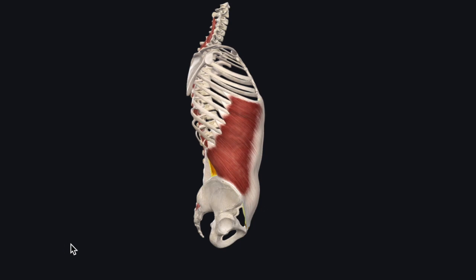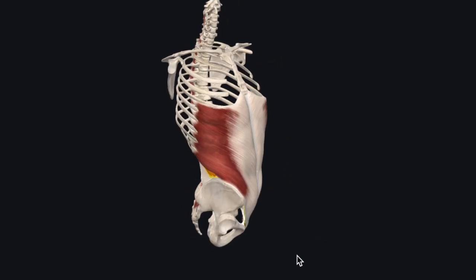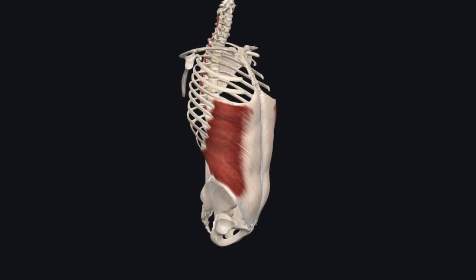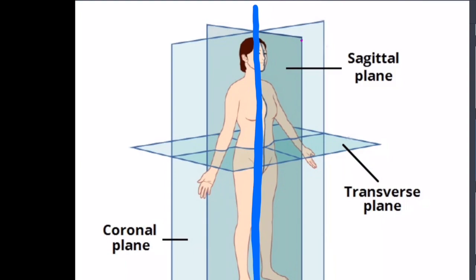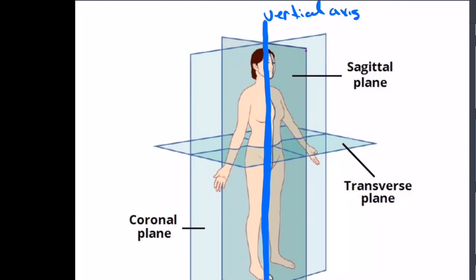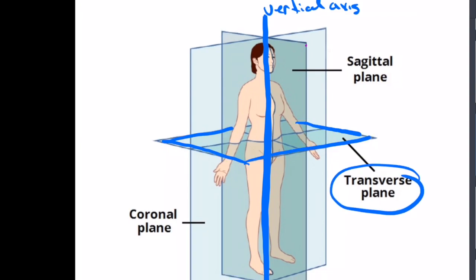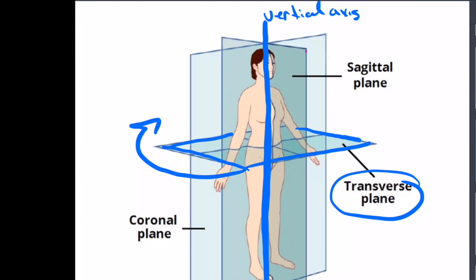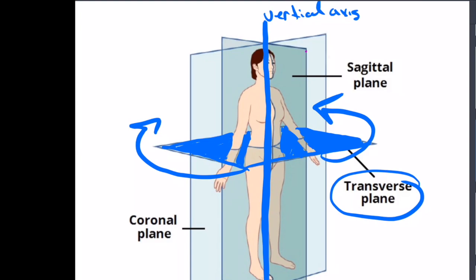We're also going to be discussing rotation. As you can see here, you're basically twisting your body either to the right or to the left. Let's pretend there's a pole in the middle of the person — when this person rotates, it's going to move around this bar either to the right or to the left. We'll call that a vertical axis. The plane of motion in this case is going to be the transverse plane. When this person rotates to the right or left, they are doing it within the available area of a transverse plane. So rotation has the vertical axis and a transverse plane.